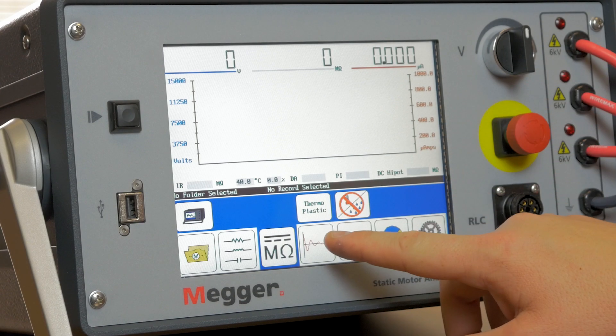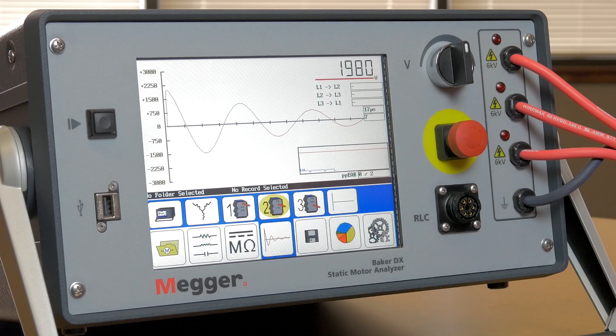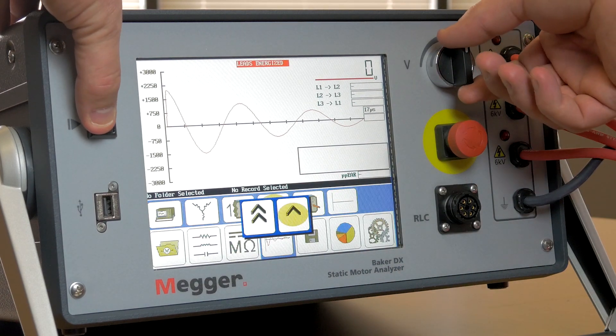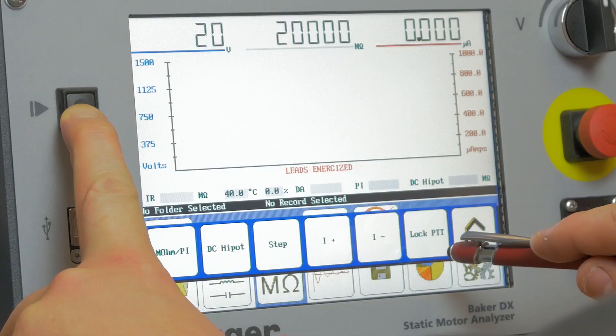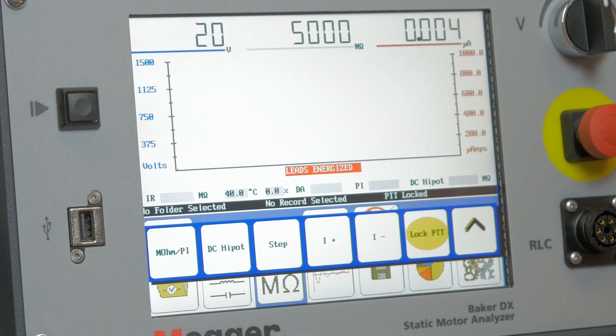To run a test, select the test type desired. Select the lead if applicable. Press and hold the PTT button and ramp up the test voltage. For the long DC ground wall insulation tests, a PTT lock is available.